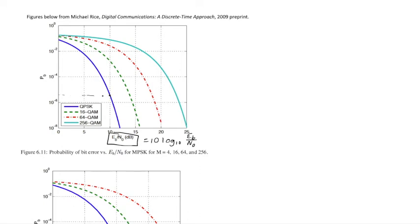That would mean I would be somewhere between 10 to the minus 4 and 10 to the minus 6 in terms of probability of bit error. This Pb is the probability of bit error. The Rice book uses Pb universally for probability of bit error.